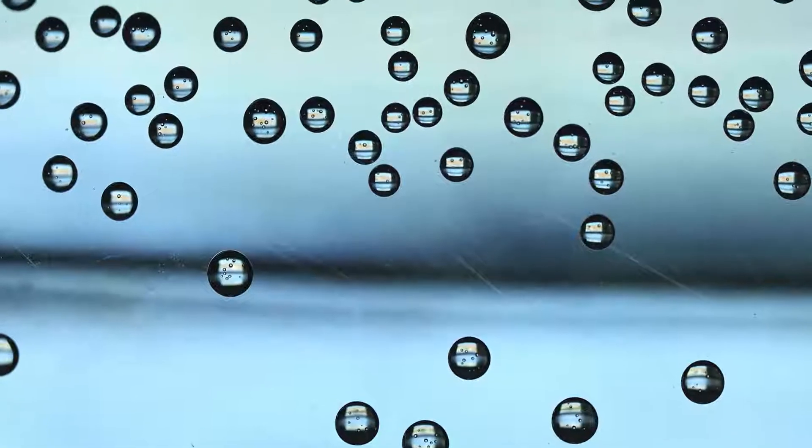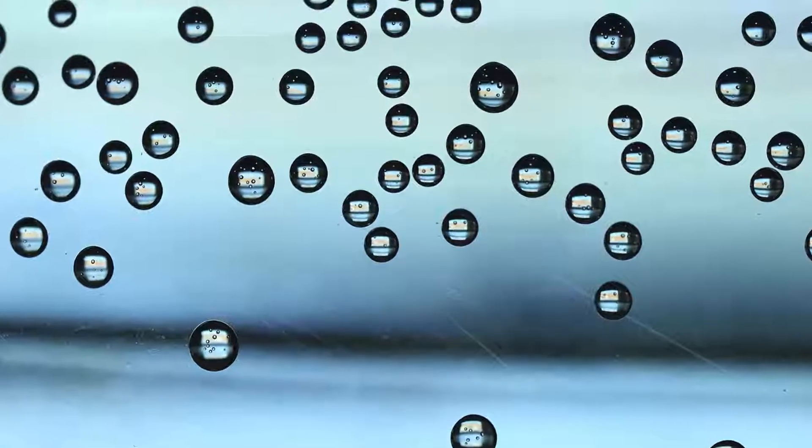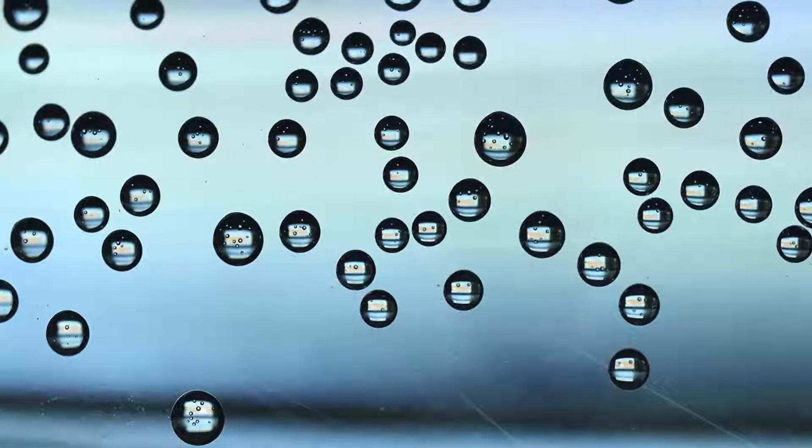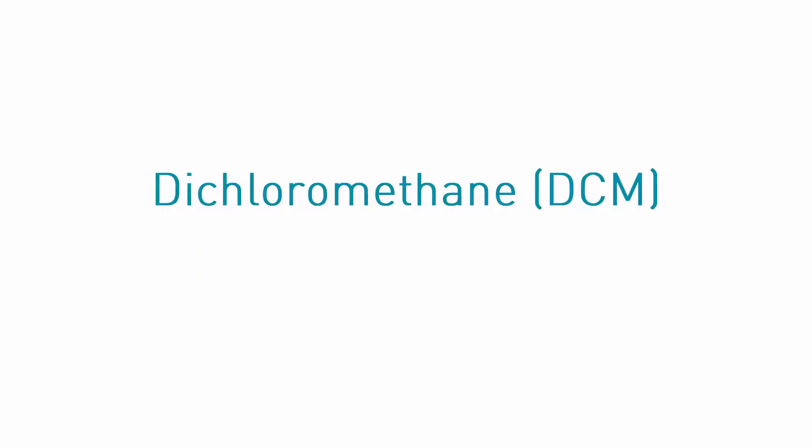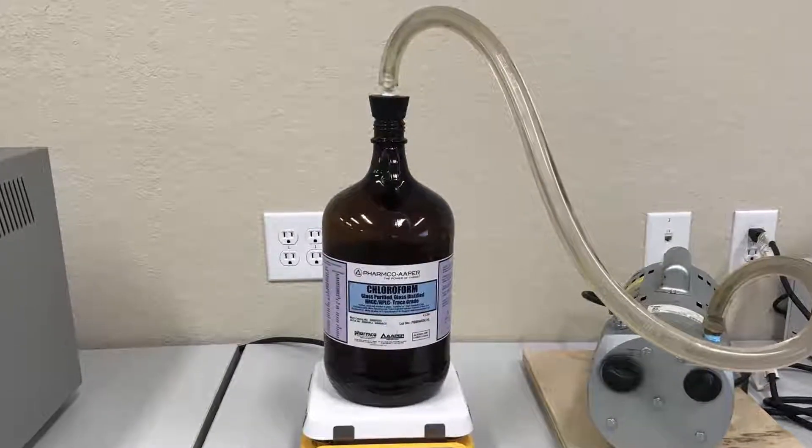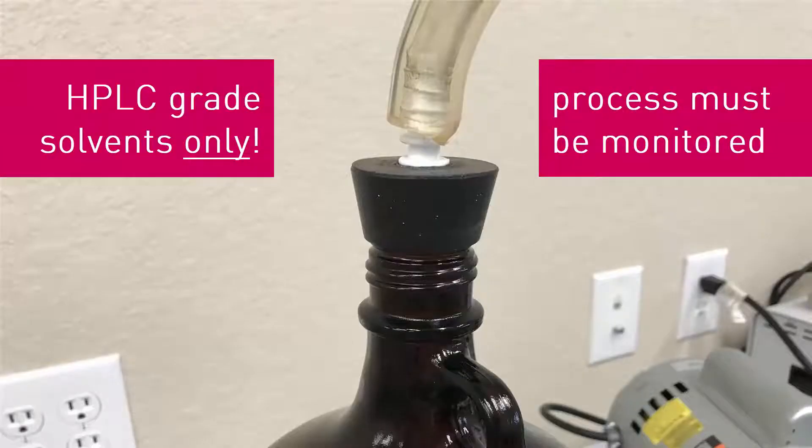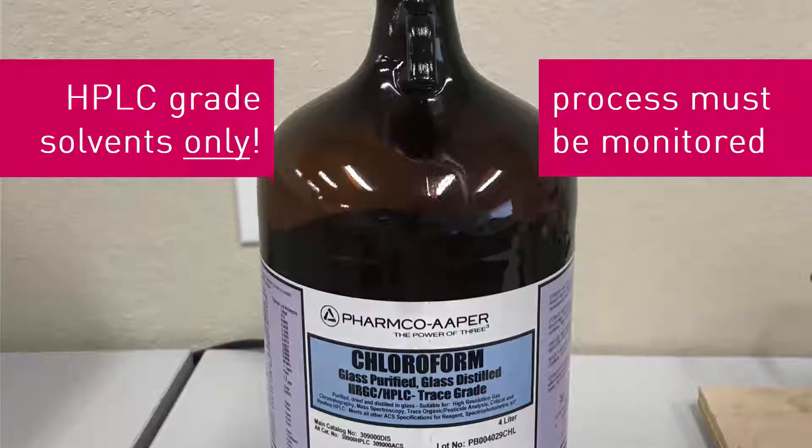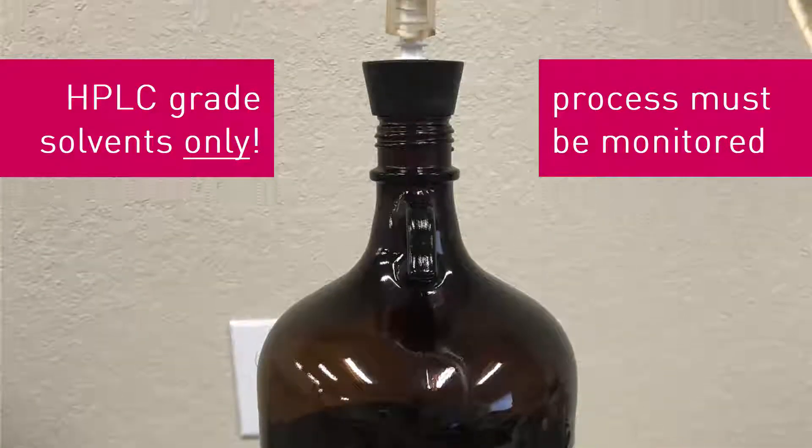As an aside, if you're using an HPLC-grade solvent that contains a lot of dissolved gas, such as dichloromethane or chloroform, you can thoroughly degas the solvent by placing the bottle under vacuum while being stirred. This process must be monitored closely and should not be extended for more than a few minutes at most to minimize solvent evaporation.